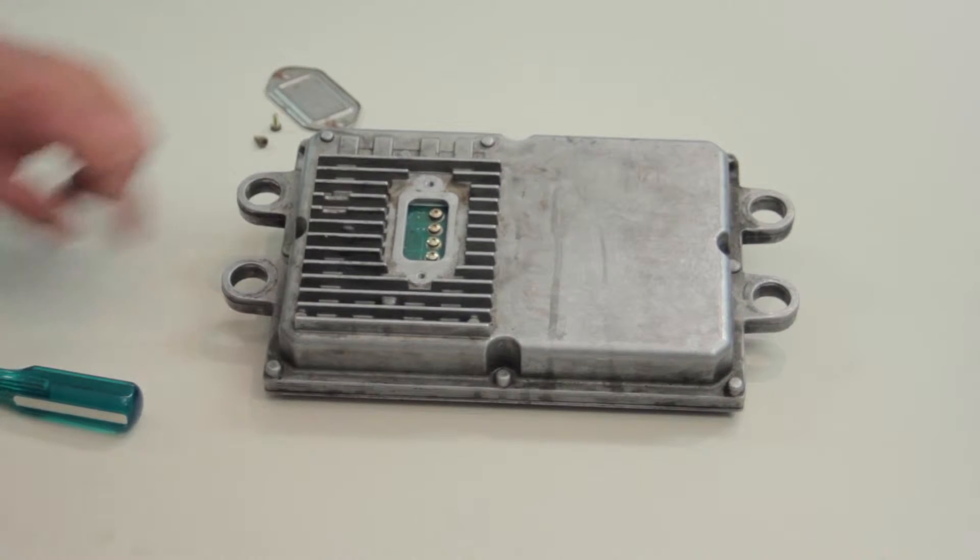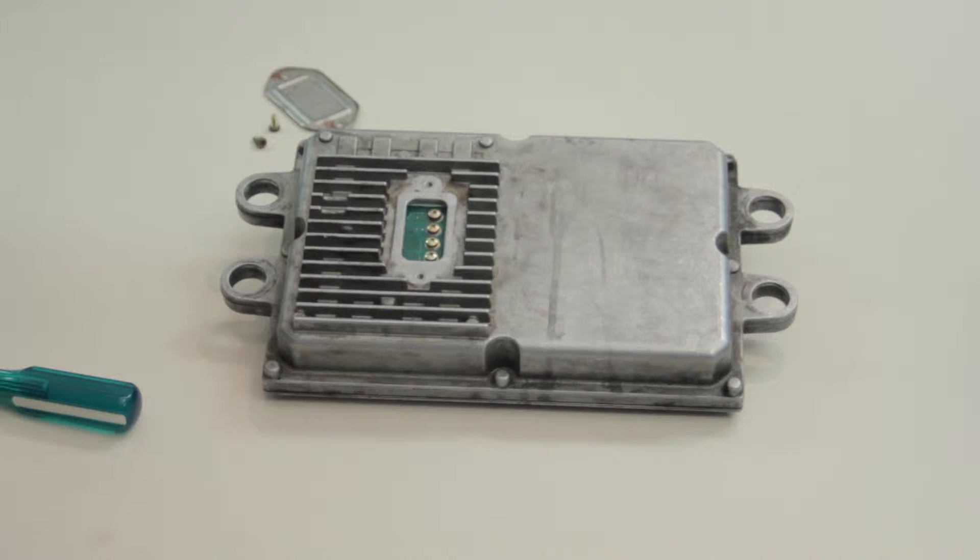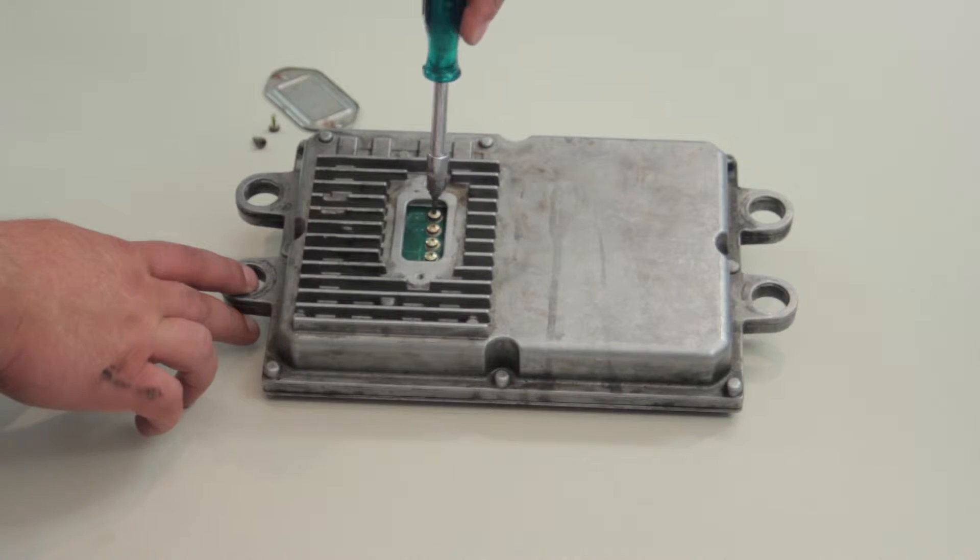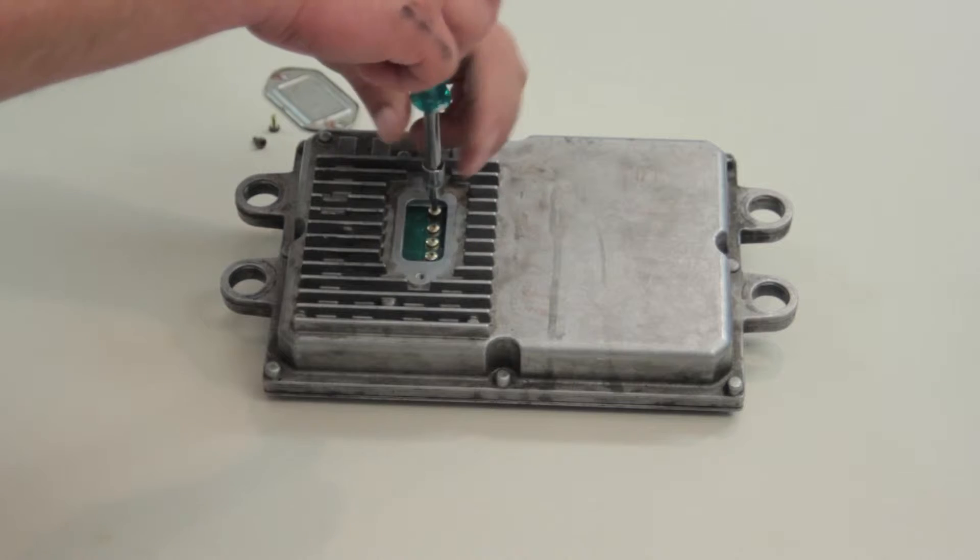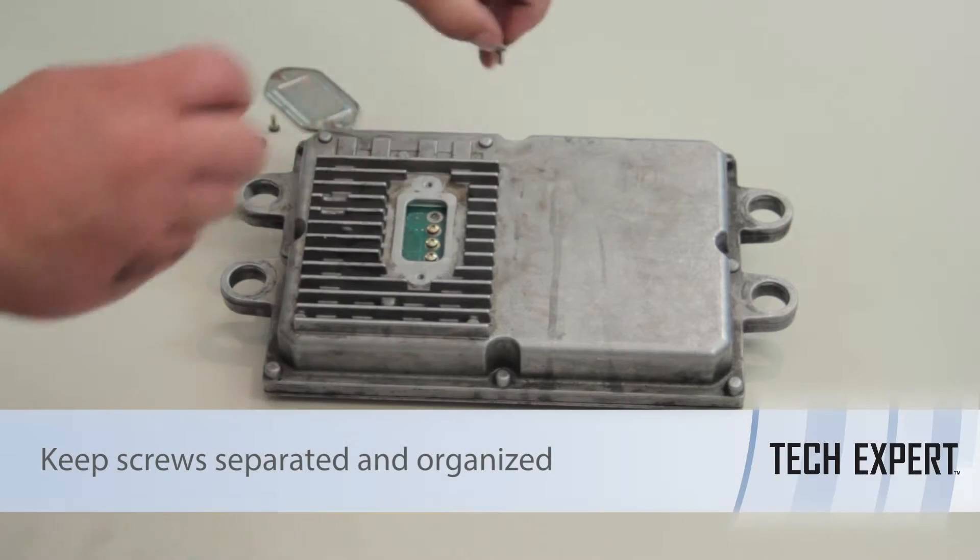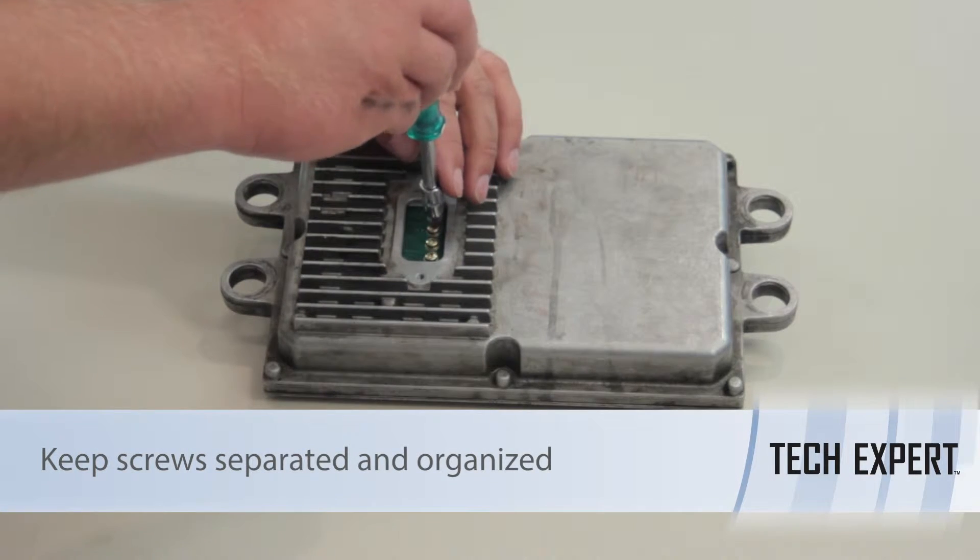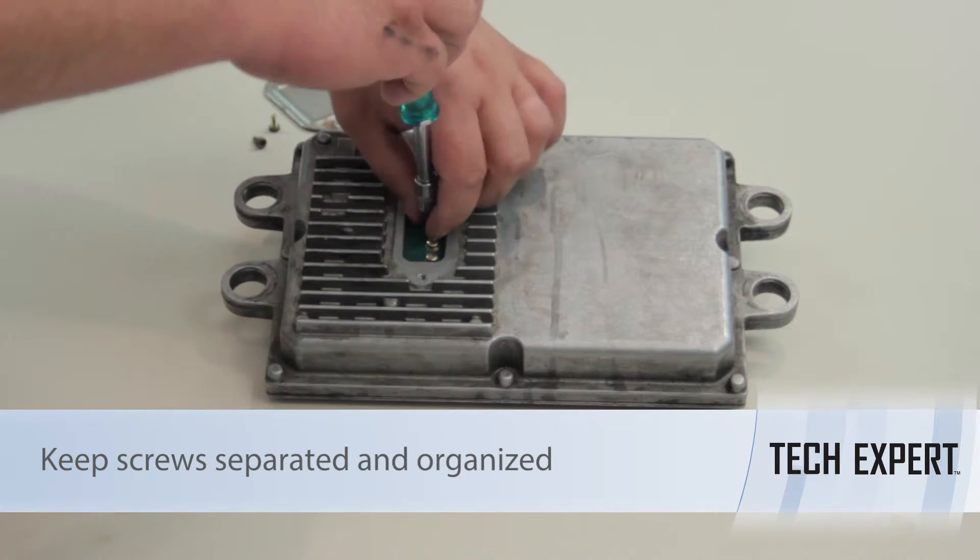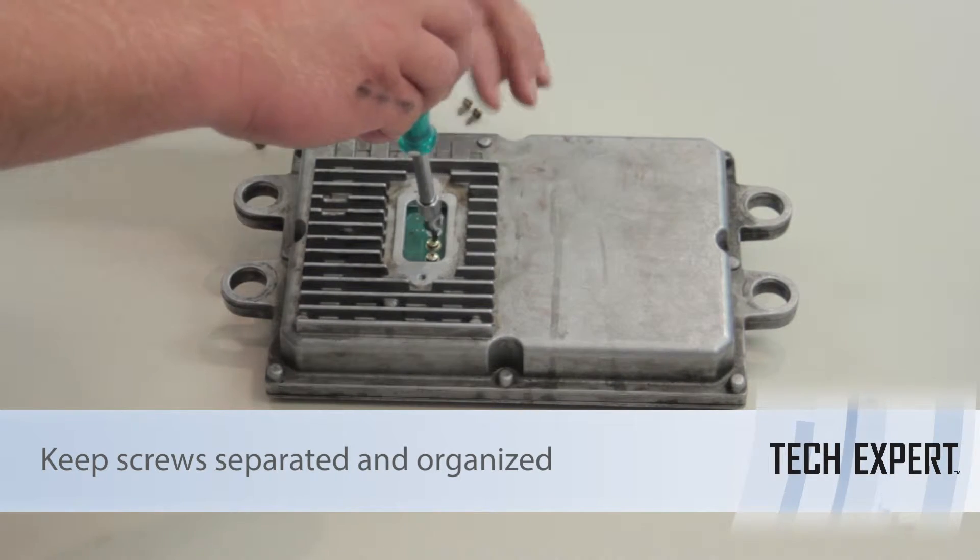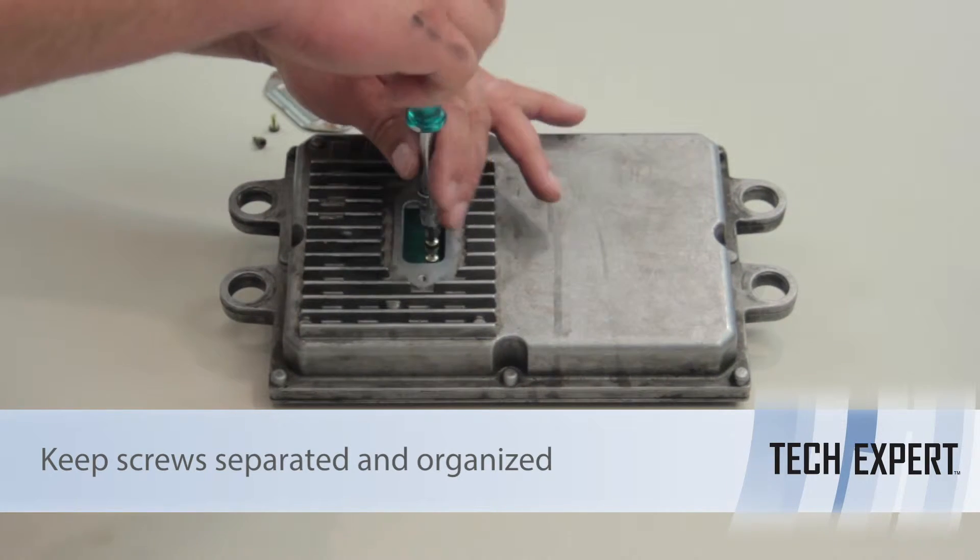We do have that so I'm going to go ahead and use another Torx driver and remove these. Now I'm going to take my T10 Torx driver and remove the four of these. Now we want to keep all the different screws that we remove out of here separate. A lot of them will be different sizes so we'll keep these four separate from the two that we removed from that first cover.